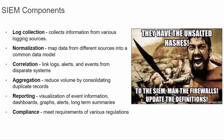The components of a SIEM include, among many, log collection — which collects information from various logging sources — normalization, which maps data from different sources into a common data model for comparison, correlating logs, alerts, and events from disparate systems, and aggregating that data by consolidating duplicate records. The SIEM also has reporting capabilities for visualization of event information including dashboards, graphs, alerts, and long-term summaries.